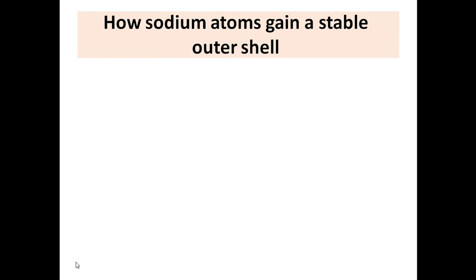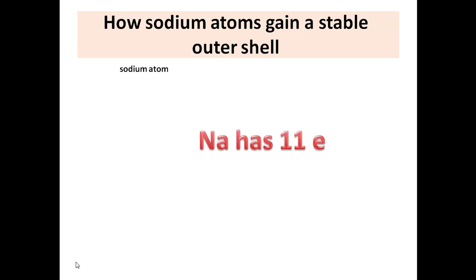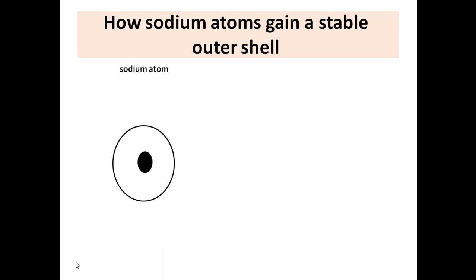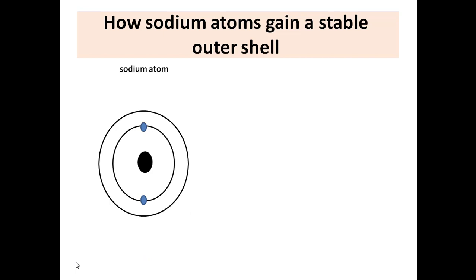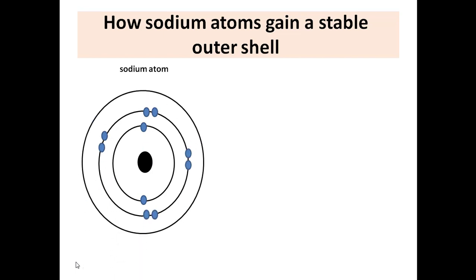Let's take a sodium atom. Sodium has 11 electrons. If we distribute these 11 electrons in the shells — the first shell's capacity is 2 electrons, the second shell's capacity is 8 electrons, and here we have only one electron in the outer shell. This atom is not stable because the third shell should be filled with 8 electrons, but we have only one.